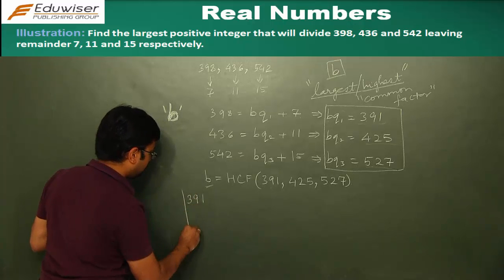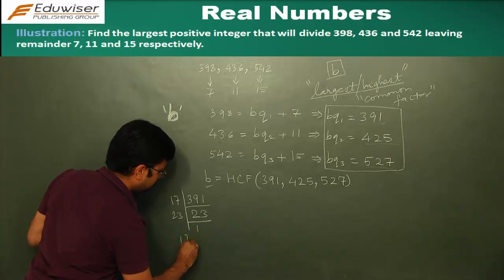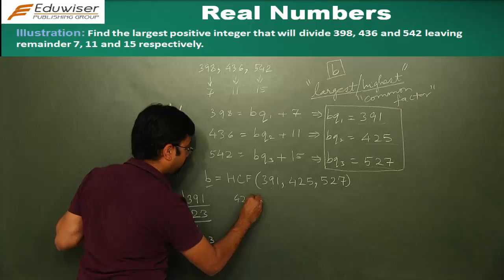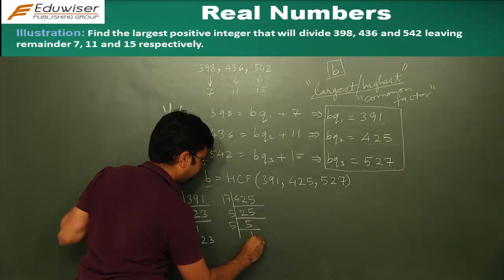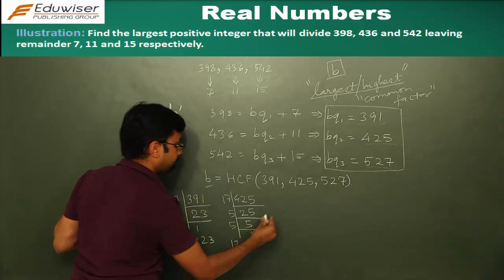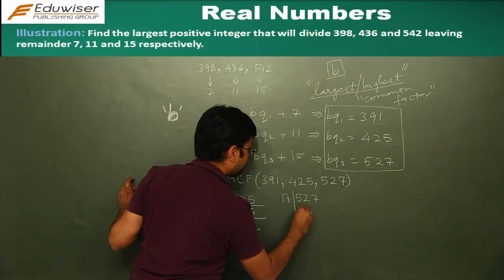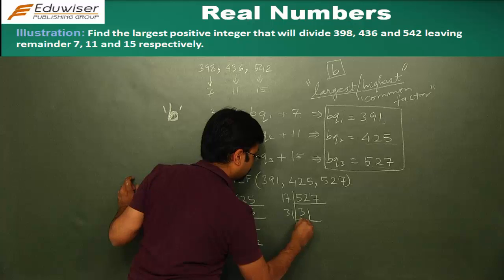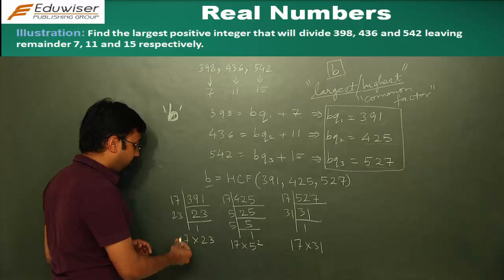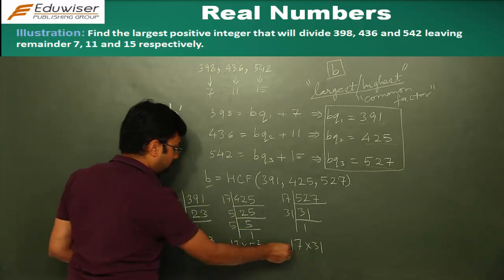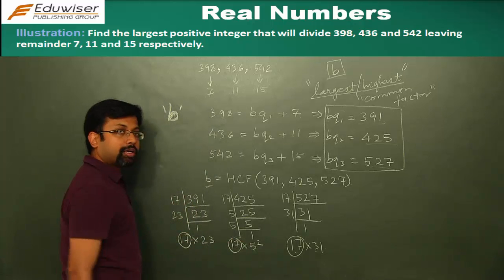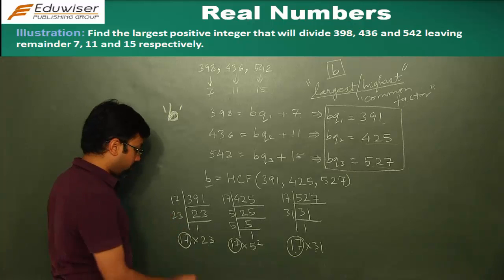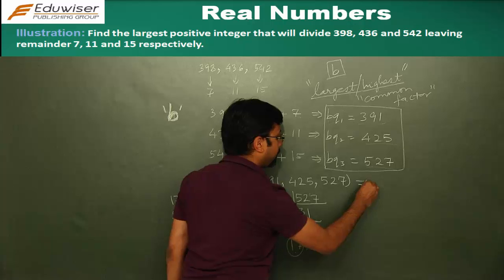If I do prime factorization, let's see if it goes by 17, it goes. So it becomes 17 into 23. Similarly, 425, let's see if it goes by 17, it does. So it is 17 into 5 square and 527 would be 17 into 31. And what did I say? The HCF is the lowest power of the common prime. So the common prime in all these three numbers is 17. The others are not. Although 23, 5 and 31 are prime factors, but they are not common across the three numbers. Only 17 is common. We have to take the lowest power of it. And the lowest power is 1. So the HCF would be 17.